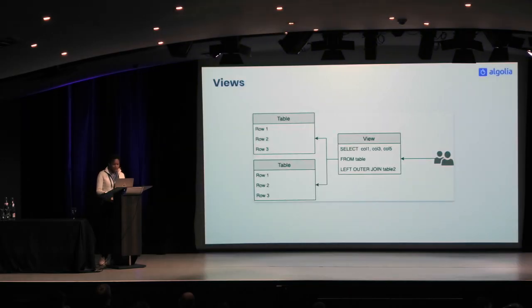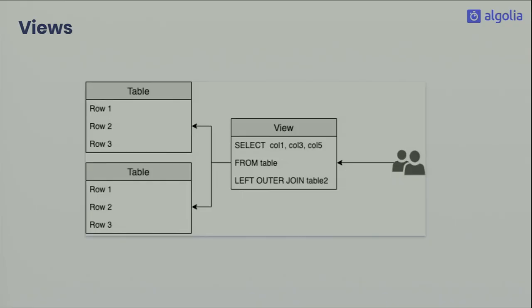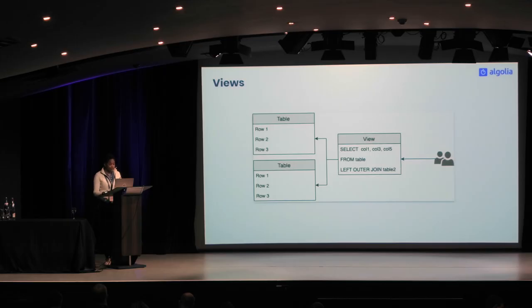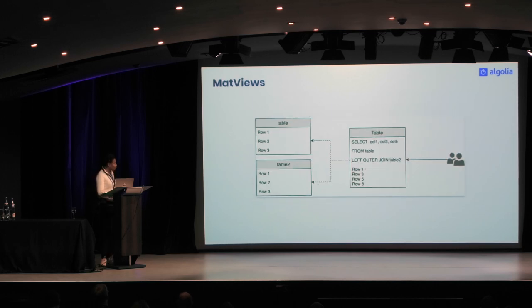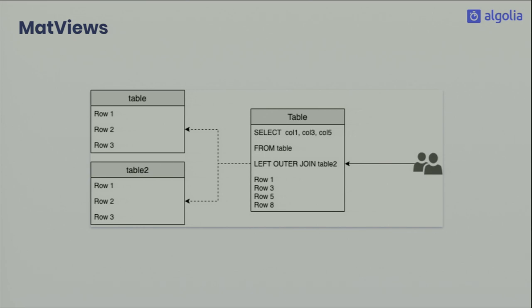Now for the theory. A materialized view is in between a view and a table. A view is just a saved query — in the pg_catalog we just save the query, and each time a user queries the view, they execute the query on the source table. It's basically a nice tool to save a complicated query with window functions, distinct, or complicated lateral joins. The difference with a materialized view is that the mad view saves both the query and the results.